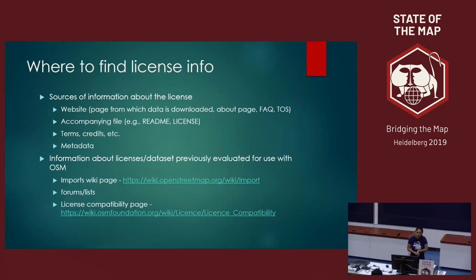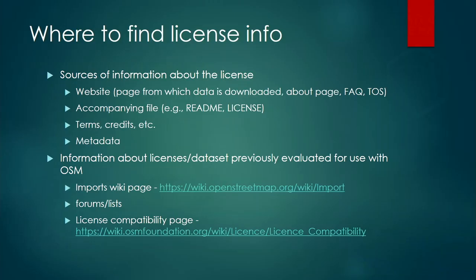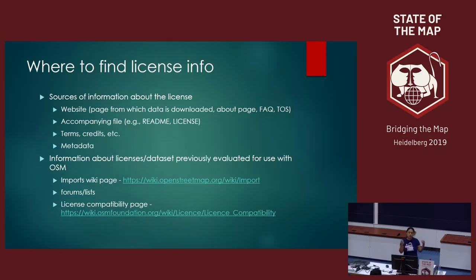In terms of practicalities of finding this information: you might go onto a website and there might be a link to terms of service, but a lot of times that's just about the website, not the data. You might have to find an FAQ just about the data, or another page that says 'data license.' Sometimes it's on the page with the data, sometimes it's in the download file — you just have to click around and look for it. Other mappers have done a lot of research too, so past imports and wiki pages with historical information can be very useful.